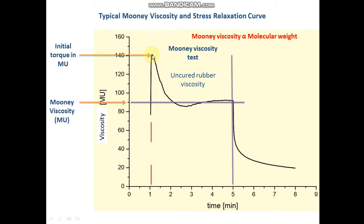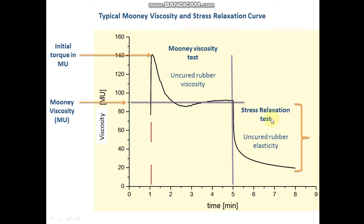The initial point is called the initial torque, which relates to the stiffness and initial molecular weight of our rubber sample. At the fifth minute the rotor will stop suddenly, then the decaying of the torque will be recorded. The test will further run for another two to three minutes, and during that time duration the viscosity values will be measured, giving the stress relaxation curve of the uncured rubber material.